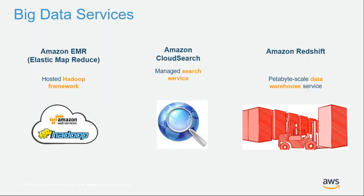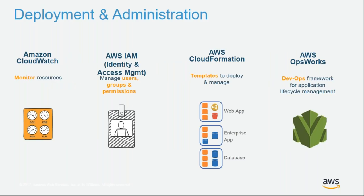For big data, Amazon EMR (Elastic MapReduce) is a hosted, fully managed Hadoop framework — you just decide the cluster size and number of nodes. We also have Amazon CloudSearch, a managed search service, and Amazon Redshift, a petabyte-scale data warehouse. For deployment and administration, we offer Amazon CloudWatch for monitoring, AWS IAM for managing user groups and permissions, AWS CloudFormation with templates to deploy and manage your environment, and AWS OpsWorks, a DevOps framework for application lifecycle management.